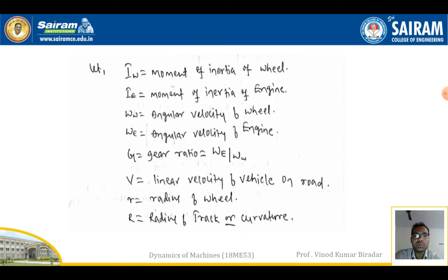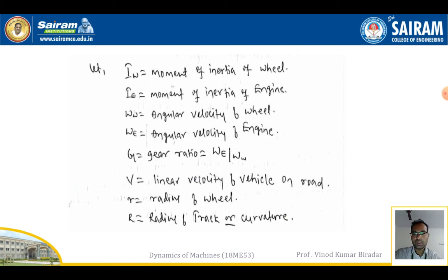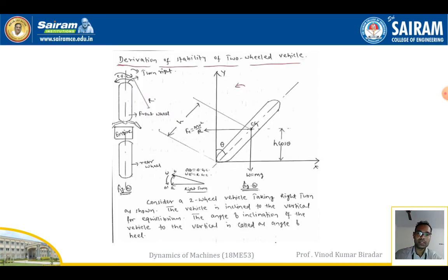These are the terms used in the two-wheel vehicle analysis. Capital Iw is the moment of inertia of the wheel; Ie is the moment of inertia of the engine. ωw is the angular velocity of the wheel; ωe is the angular velocity of the engine. G is the gear ratio, which is the ratio of the angular velocity of the engine to the angular velocity of the wheel. v is the linear velocity of the vehicle on the road; small r is the radius of the wheel; capital R is the radius of curvature.